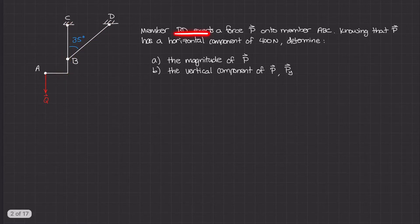Member BD exerts a force P onto member ABC. Knowing that P has a horizontal component of 400 newtons, we need to determine the magnitude of P and the vertical component P sub y.